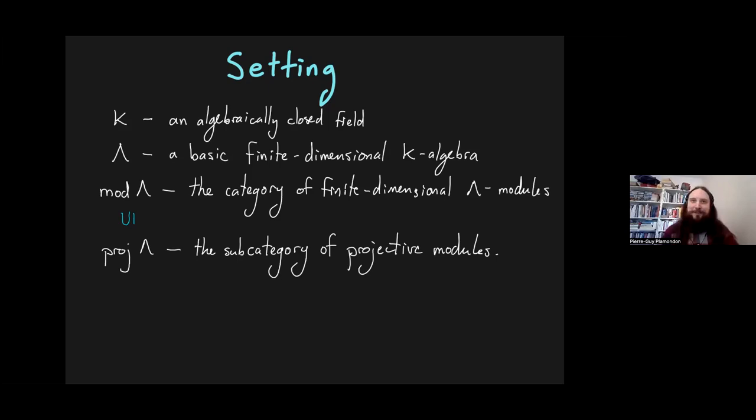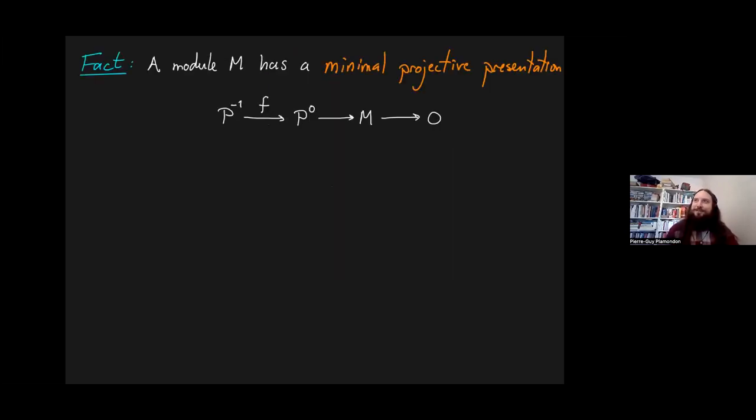Here's one fact about modules. They have projective resolutions. Now, if you truncate that projective resolution after the second term, you get what's called the projective presentation, because P^-1 goes to P^0 by morphism F, goes to M, goes to 0. That's an exact sequence. A two-term complex of projectives or a projective presentation is just exactly that when you forget about the module M. So it's just a morphism between two projective modules.